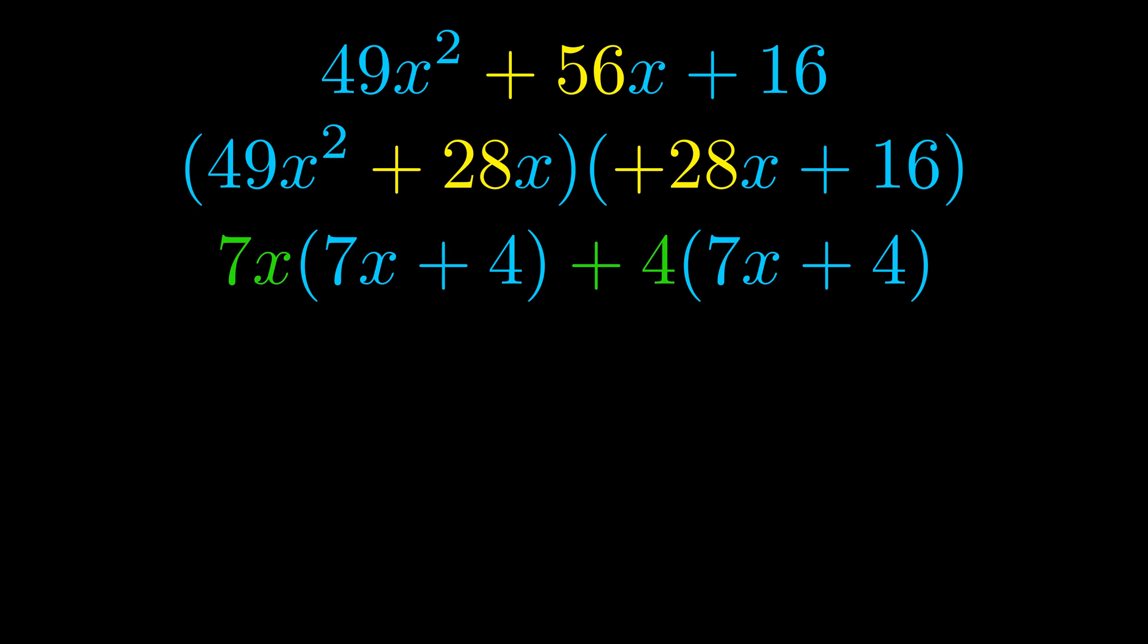Notice also how what remains inside of the parentheses is the same in both cases. The blue values are the same. Those blue values will become one of our factors and we will combine the two green values, the GCFs that we pulled out, to get the other one. And that is our fully factored equation.